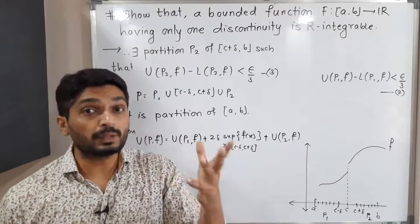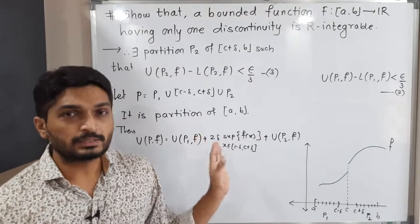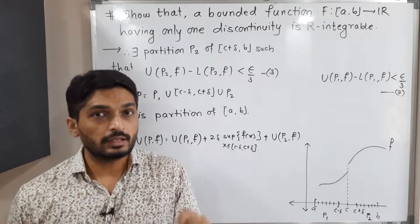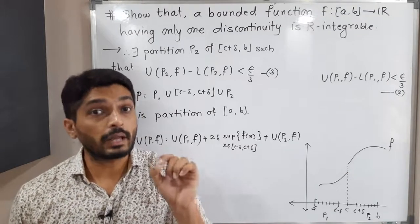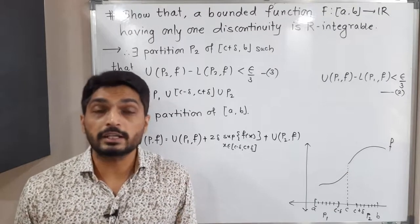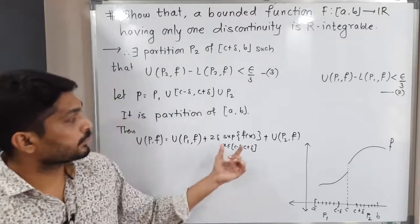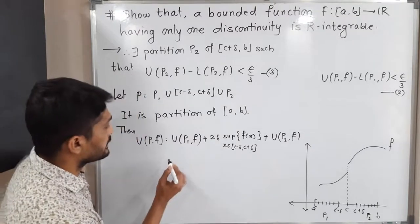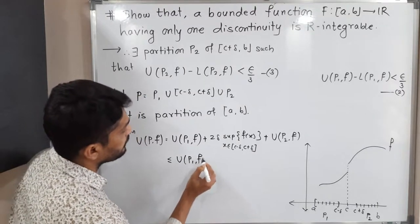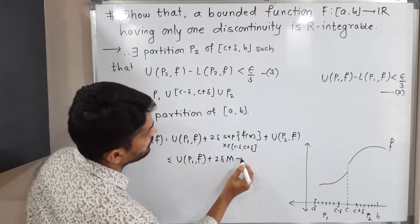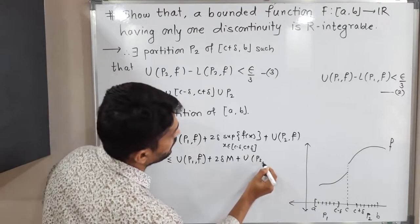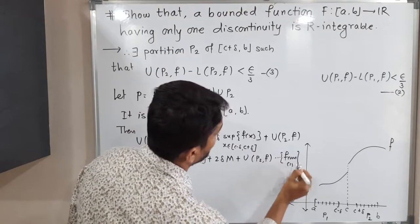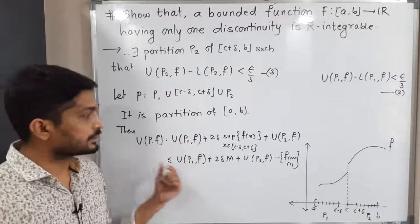From inequality (1), f(x) ≤ M, so the supremum of f on [c − delta, c + delta] is at most M. Therefore U(P, f) ≤ U(P1, f) + 2*delta*M + U(P2, f). This uses inequality (1).